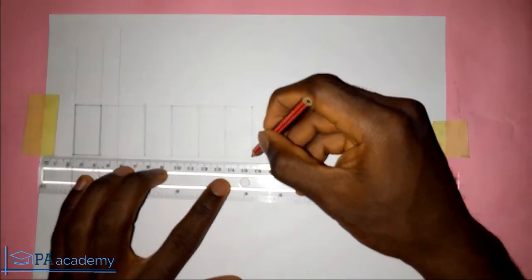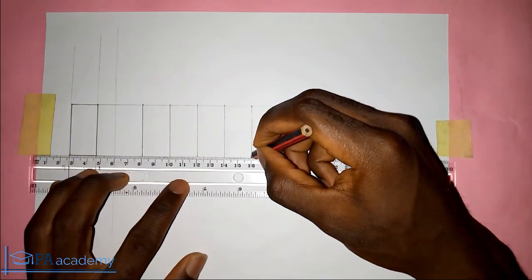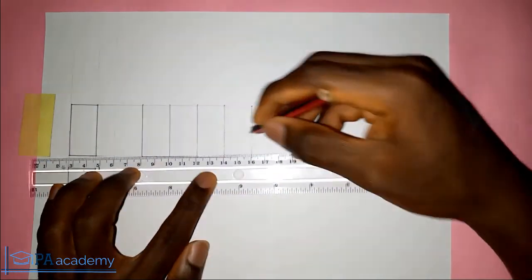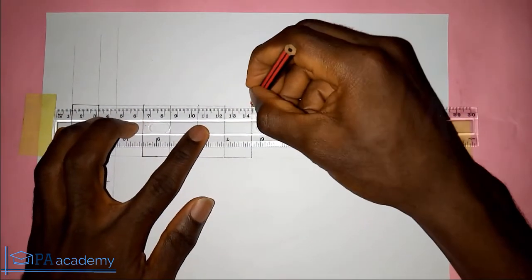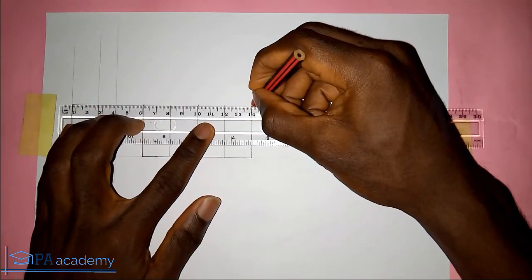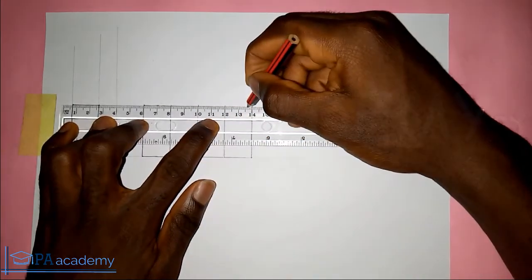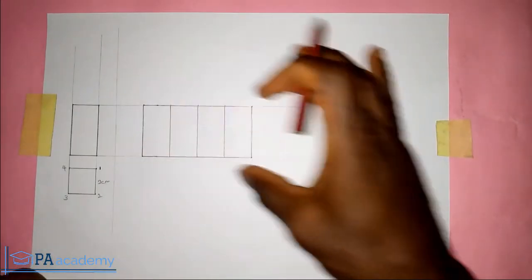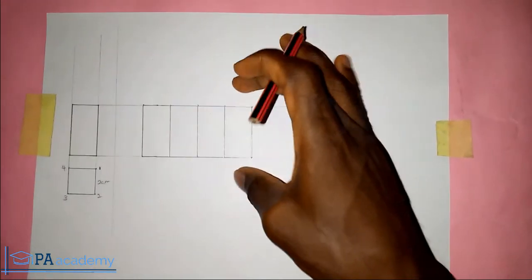Now let me draw this to make it bold. So these are for the sides, this is the element of the sides. Now the next thing is to draw that of the base. You are going to be drawing it at this last side.